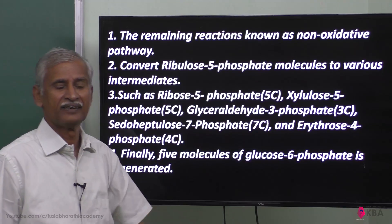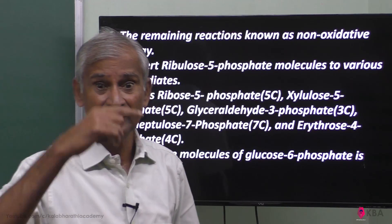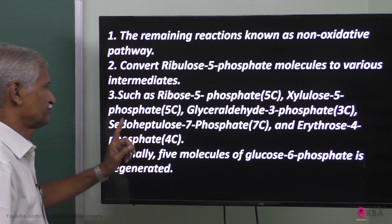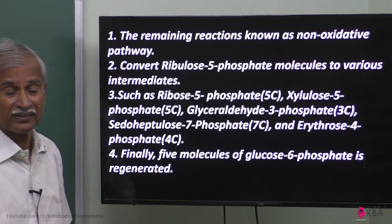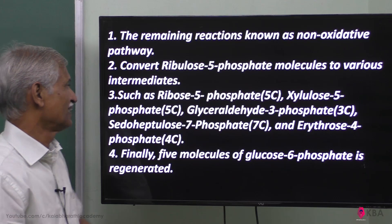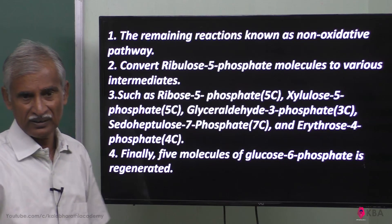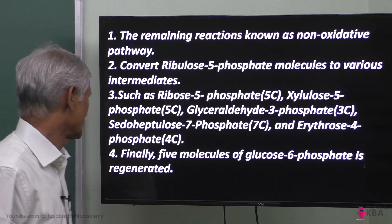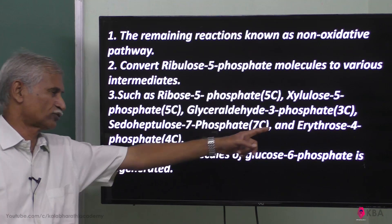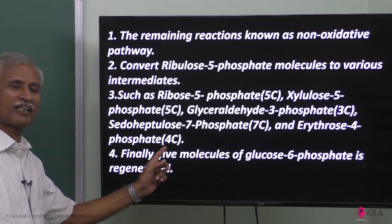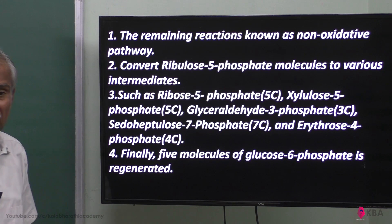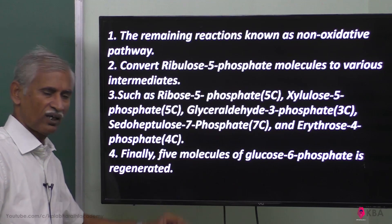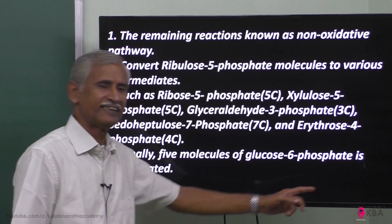Erythrose 4-phosphate is very much required for RBC cellular membrane construction. Glyceraldehyde 3-phosphate can re-enter cellular respiration for ATP production. The 5-carbon ribose is used for DNA and RNA production. The final product is 5 molecules of glucose 6-phosphate.